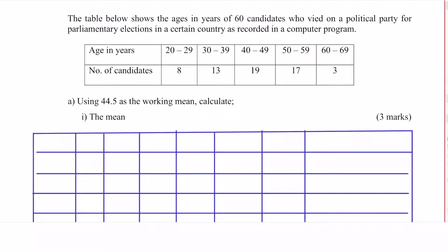Welcome to statistics. The table below shows the ages in years of 60 candidates who vied for a political party for parliamentary elections in a certain country, as recorded in a computer program.